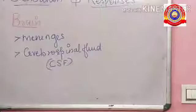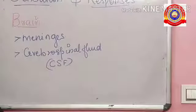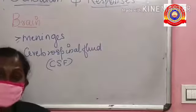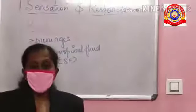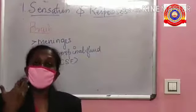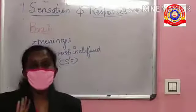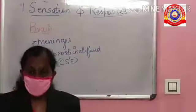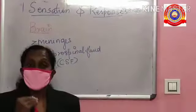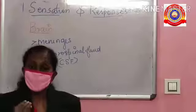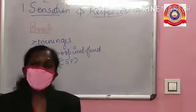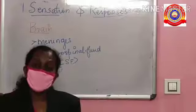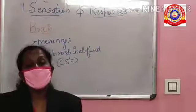Cerebrospinal fluid is also seen in the ventricles of the brain. The peculiarity of CSF is that it is obtained from the blood and is reabsorbed back into the blood itself.